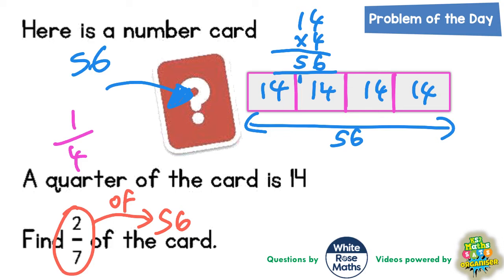Now the easiest way to do this is to find 1 seventh first. Well 1 seventh of 56 is basically splitting 56 into 7. And 56 divided by 7 is 8. So 1 seventh of 56 is 8.